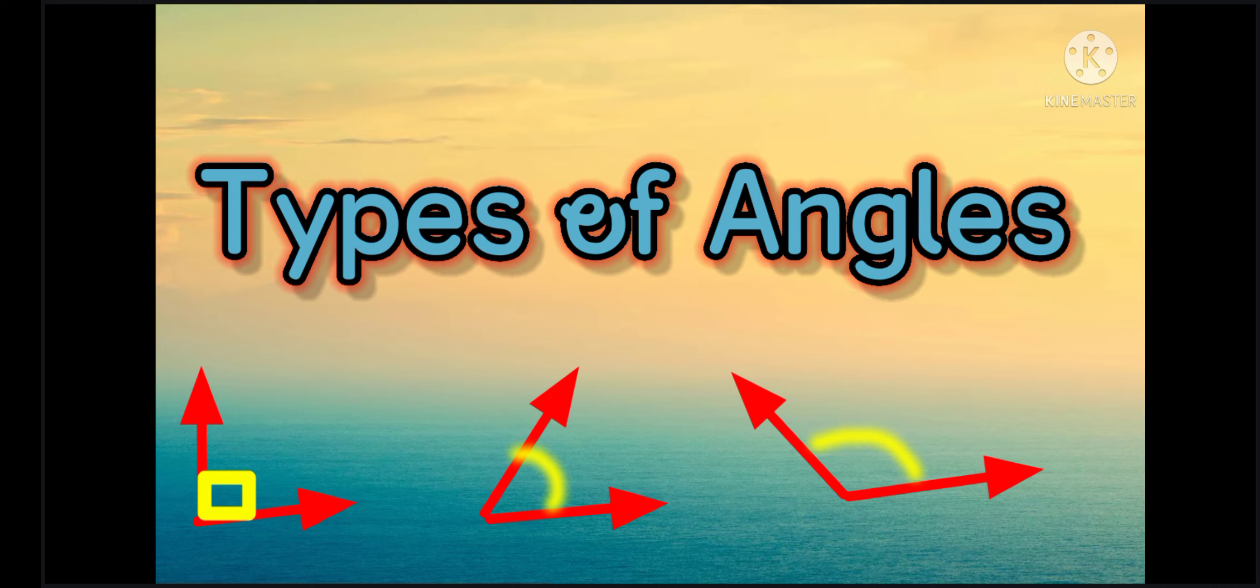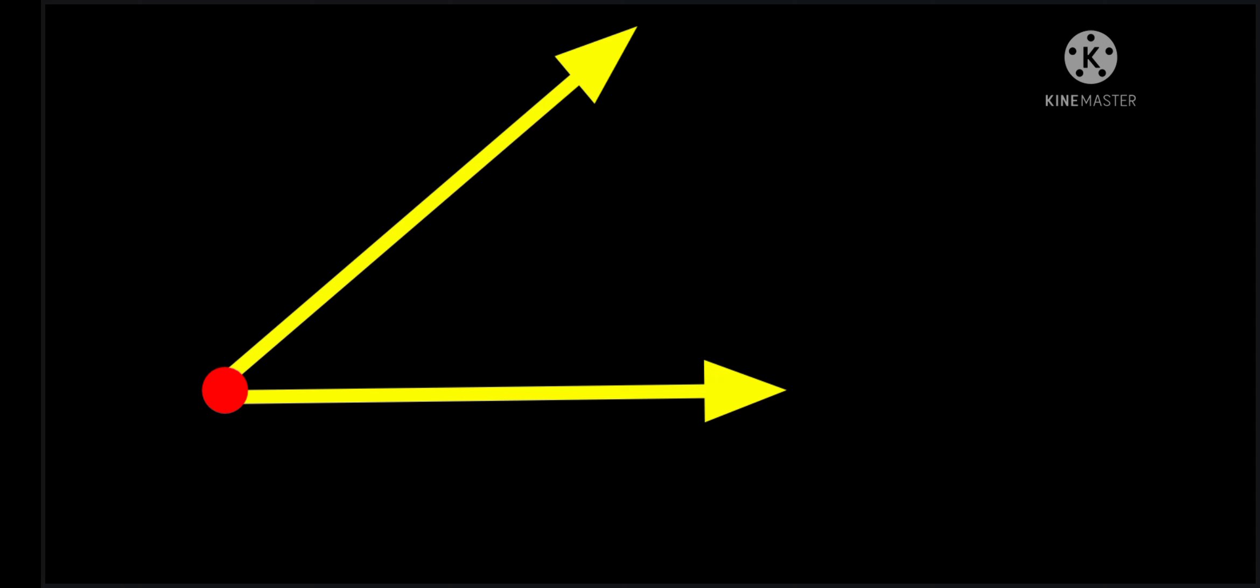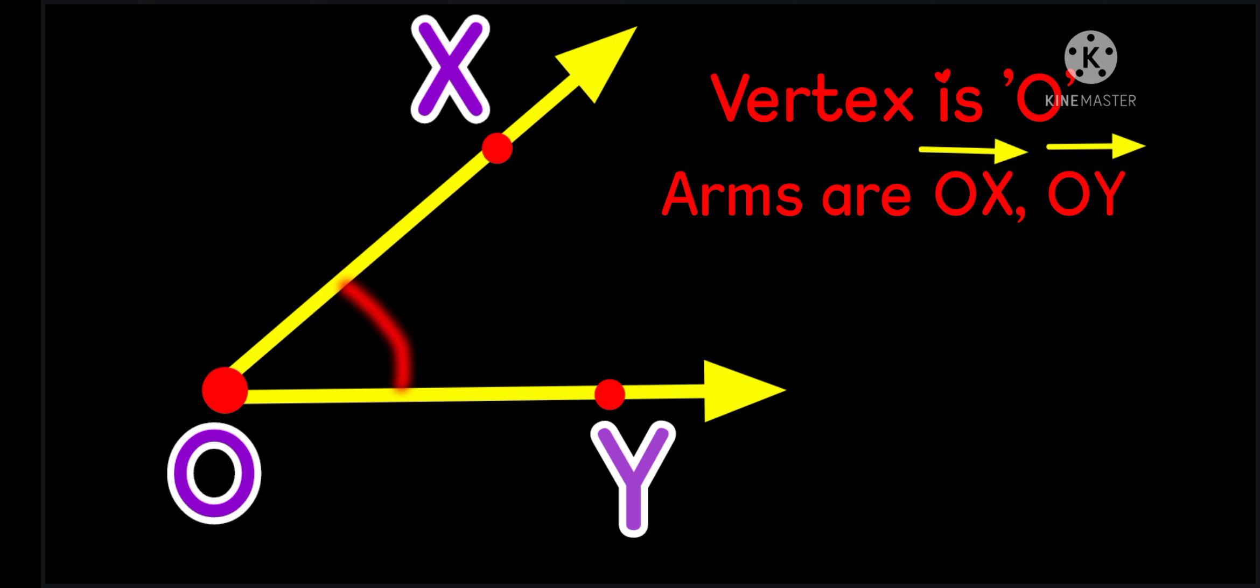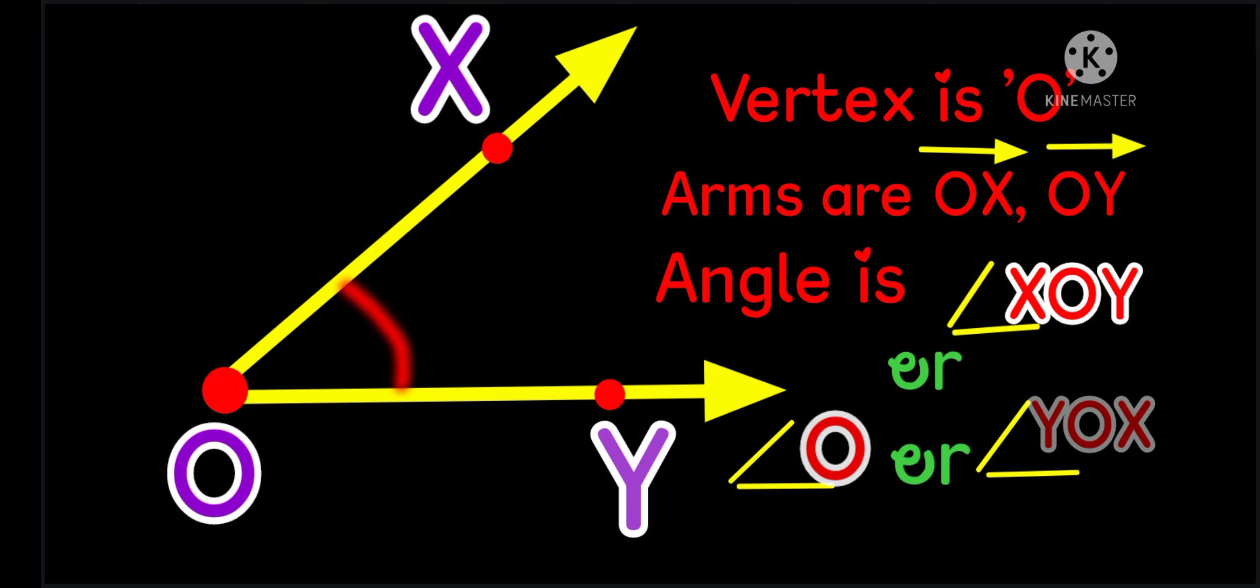Types of Angles. An angle is formed when two rays meet at a common end point. The rays are the arms of an angle. The point at which the two rays meet is called vertex. Observe the picture. Here, vertex is O, arms are O X ray and O Y ray. Angle is angle X O Y, or angle O, or angle Y O X.